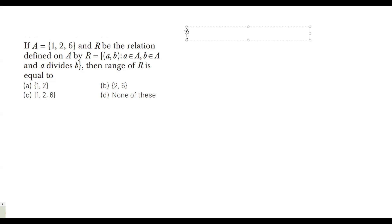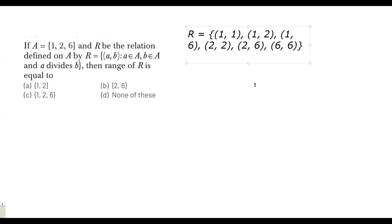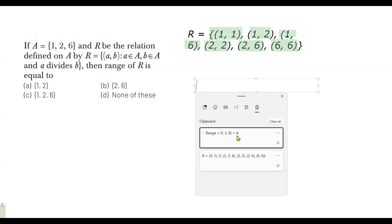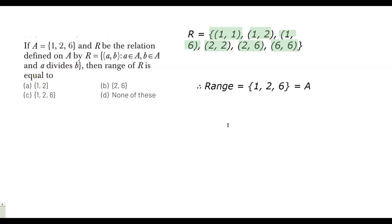Writing out the ordered pairs: (1,1), (1,2), (1,6), (2,2), (2,4), and (2,6). To find the range, we take the set of second elements. The range is therefore {1, 2, 4, 6} — looking at all second elements: 1, 2, 6, 2, 4, 6 — so the range is {1, 2, 4, 6}, which is the correct option.